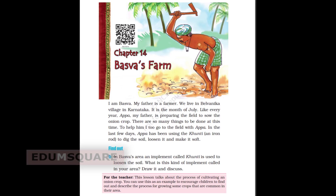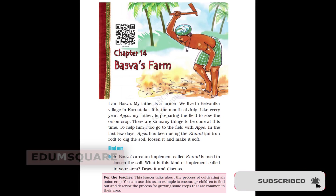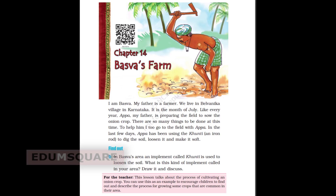In the last few days, Appa has been using the gundi, an iron tool, to dig the soil, loosen it and make it soft. In Baswa's area, an implement called gundi is used to loosen the soil. In Karnataka, they are using an implement called gundi to loosen the soil. What is this kind of implement called in your area?